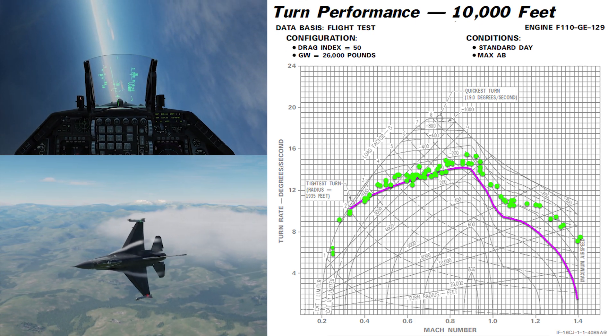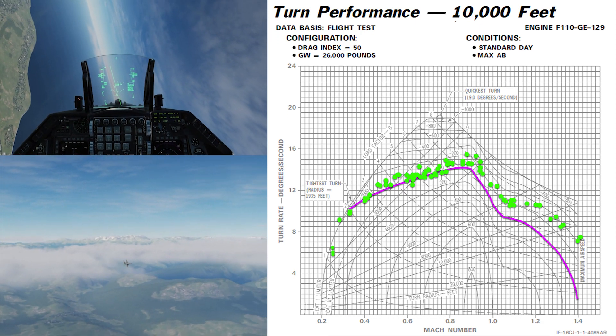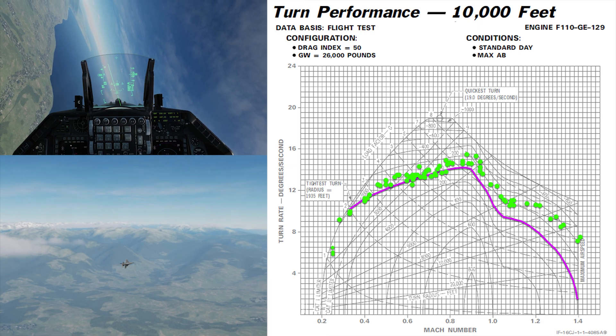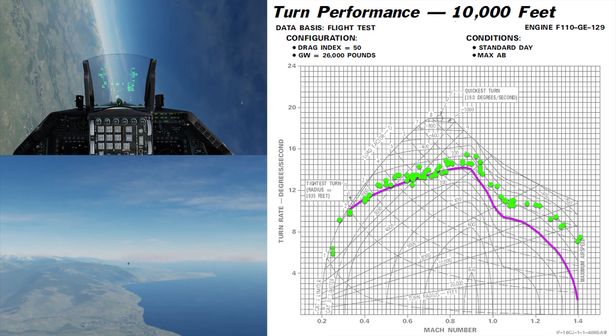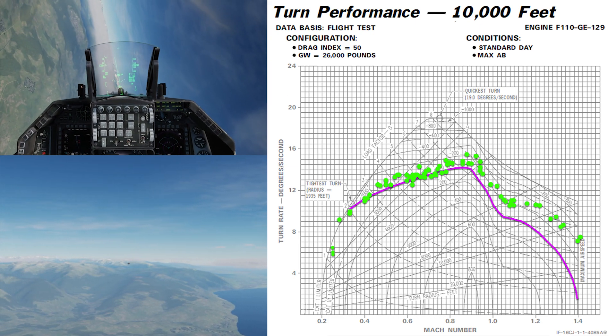You can see that under Mach 0.9 it's very accurate, it's right on that line. It starts to over-perform above Mach 0.9 a little bit, but then again we're not going to dogfight at Mach 1.0, so for our purposes in DCS this sustained right here at 10,000 feet is on the money.